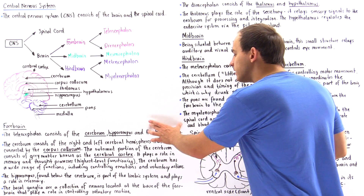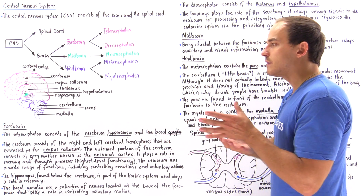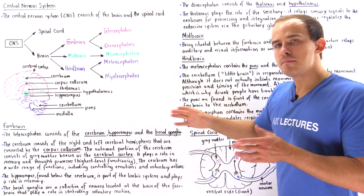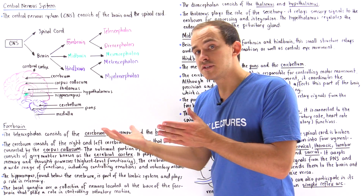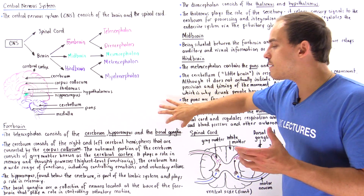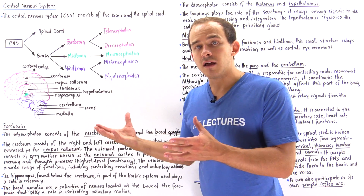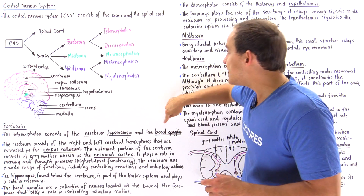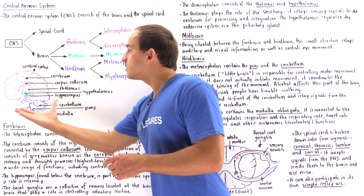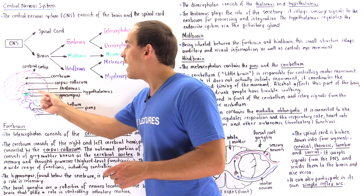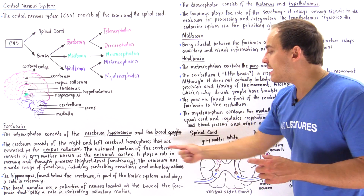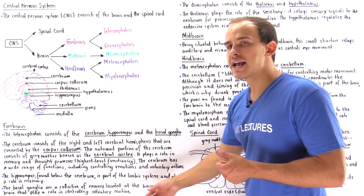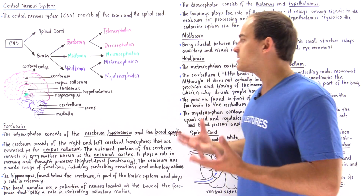The basal ganglia is a collection of cells found at the bottom of the forebrain. 'Basal' means to be at the base, and 'ganglia' means a collection of neurons — a gang of cells. So the basal ganglia is a collection of cells at the bottom of the forebrain, and its role is to control our voluntary actions and voluntary movements.